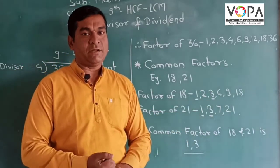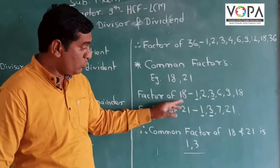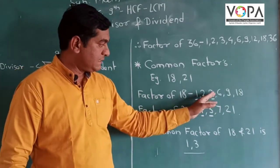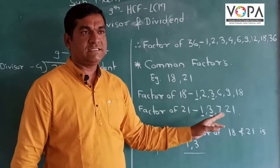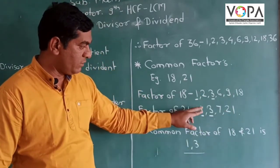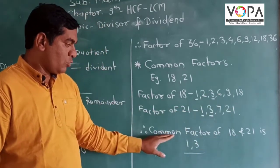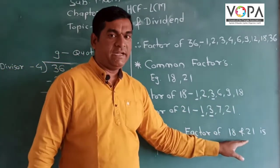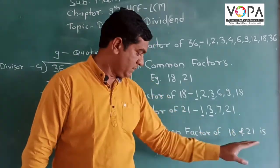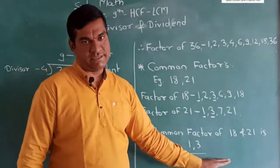Common factors are when we have 2 or more numbers and their factors, the numbers that are the same. Then we call these numbers common factors, just like 1 and 3. So the common factors of 18 and 21 are 1 and 3.